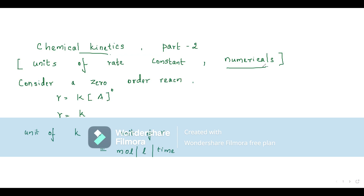Rate law is the experimental relationship between rate of a reaction and concentration of reactants. Now let us first see whether we have a fixed unit for K, that is the rate constant. Let us begin with a zero-order reaction.